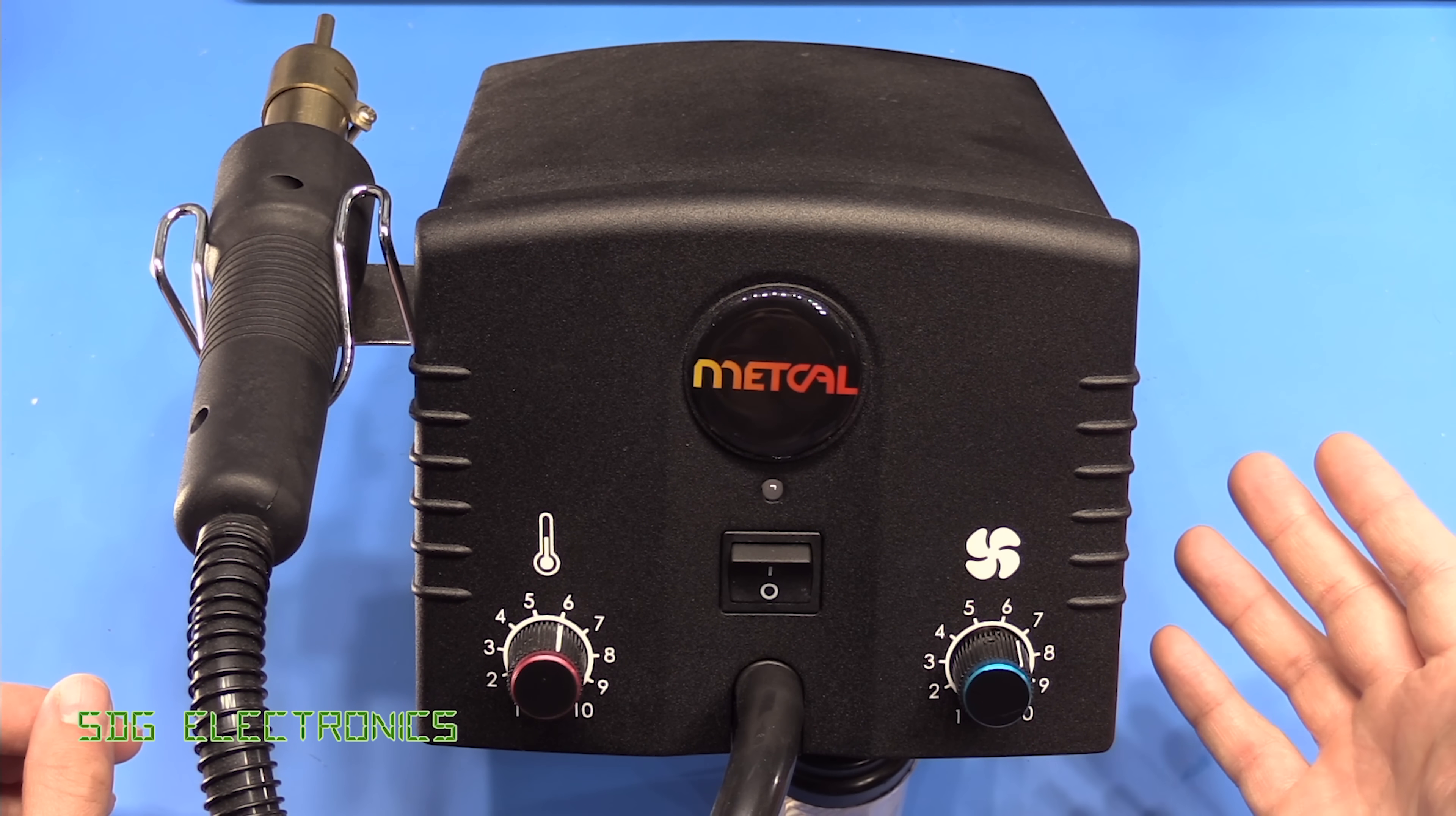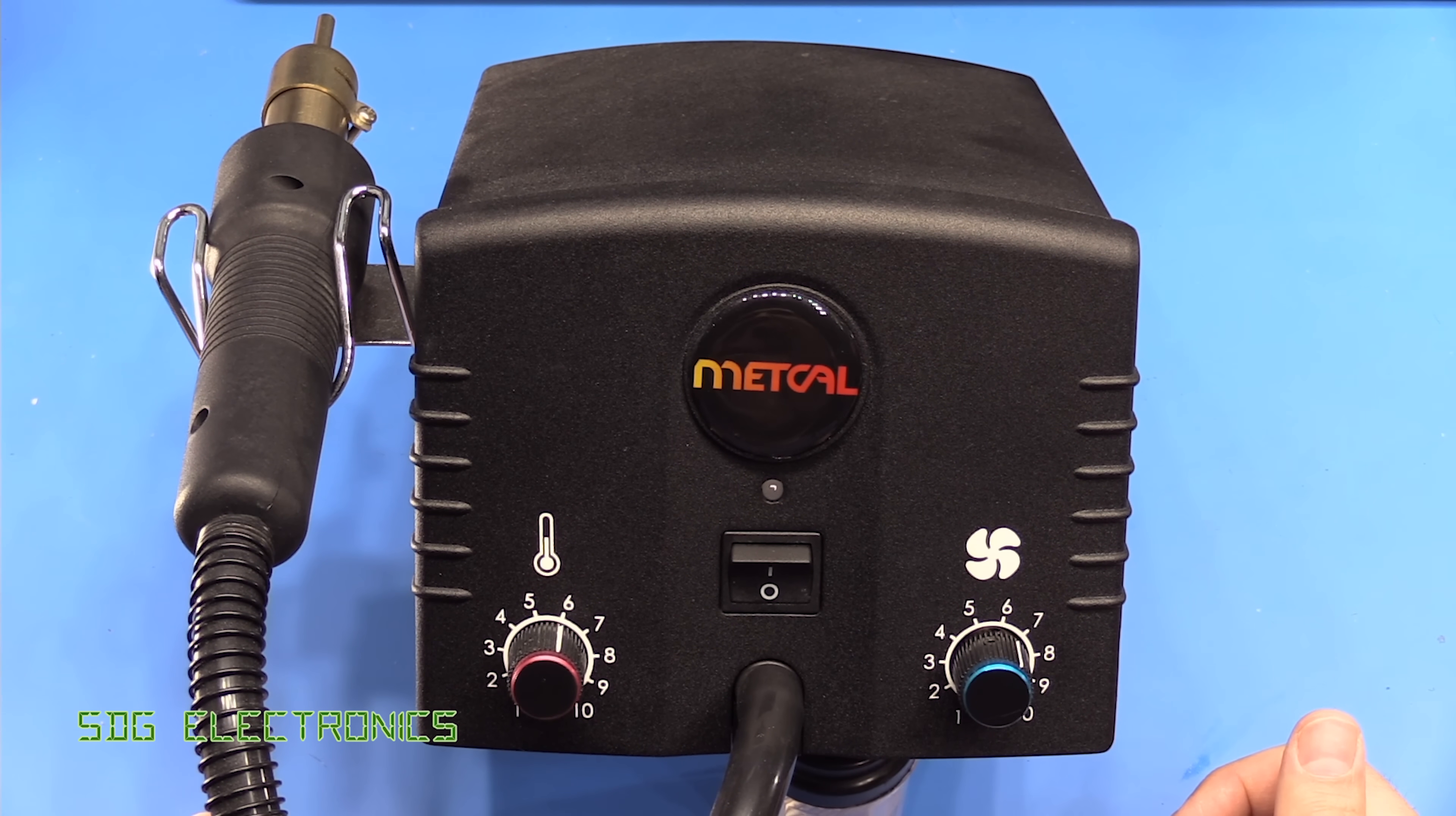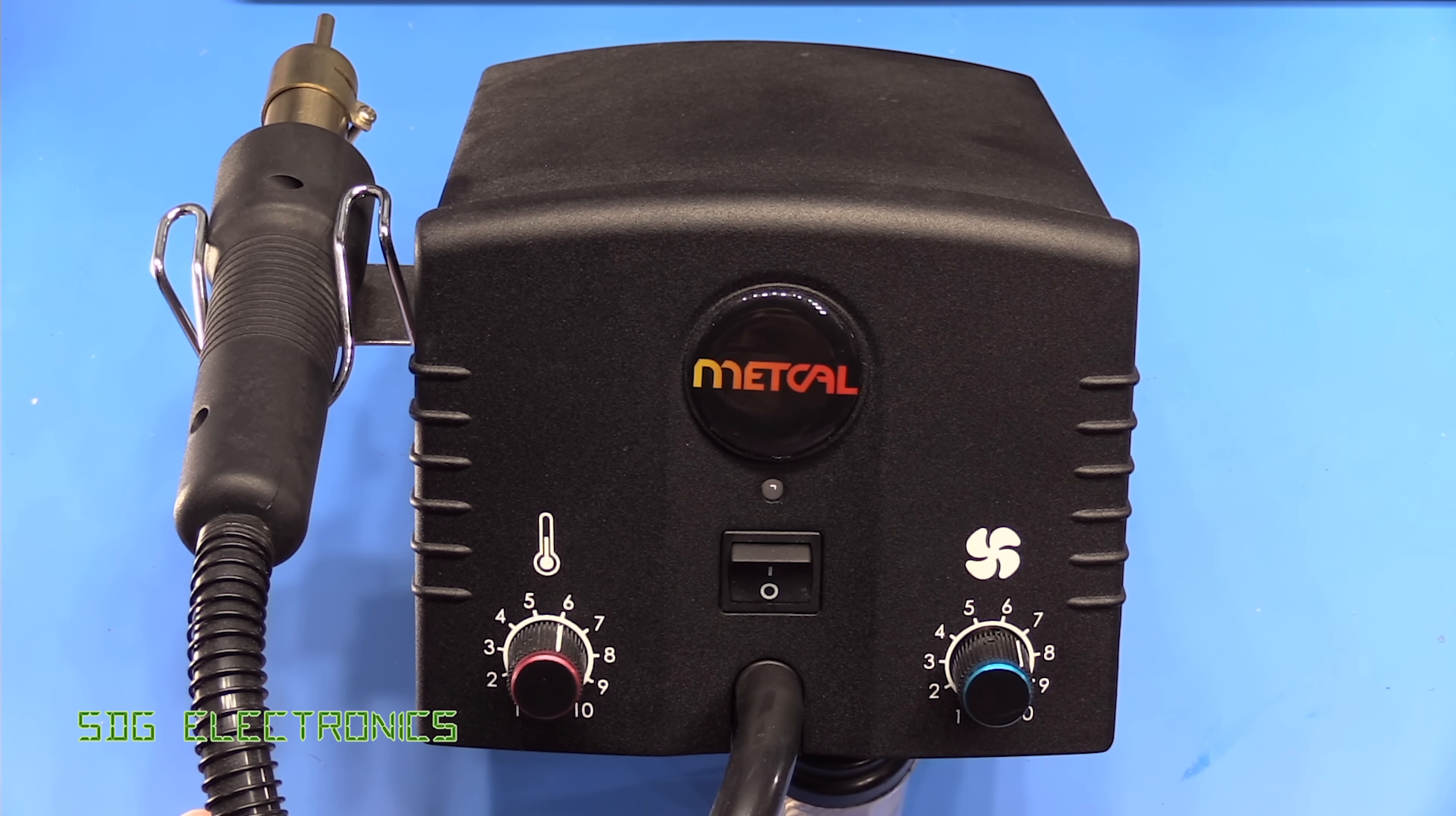What you're actually doing when you're using the hot air station is you're using visual feedback to work out how much heat is getting onto the board, and then you can work out whether you need to adjust either of these two settings. So the temperature is somewhat arbitrary. A lot of these systems where you set them in one degree settings is pretty pointless because you're never going to need that kind of accuracy.